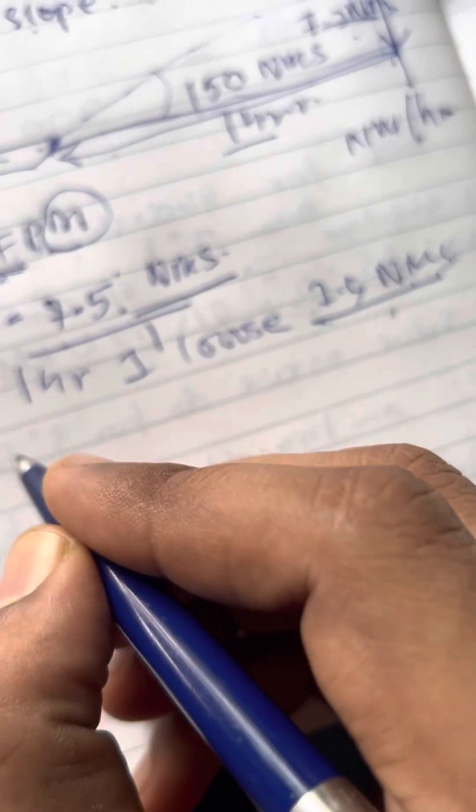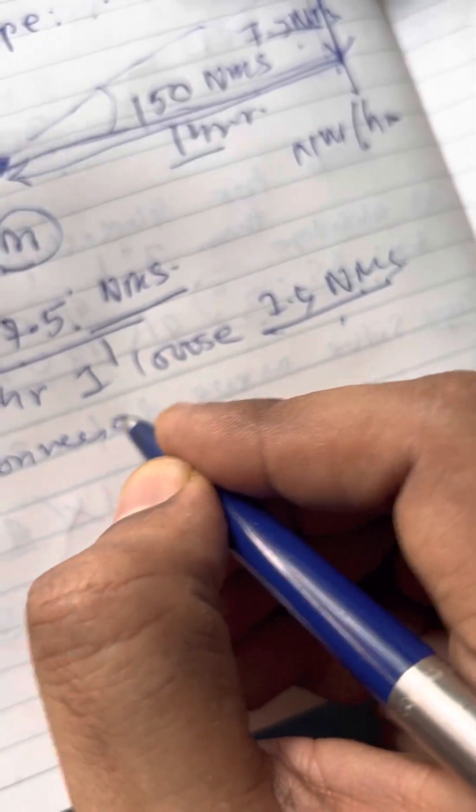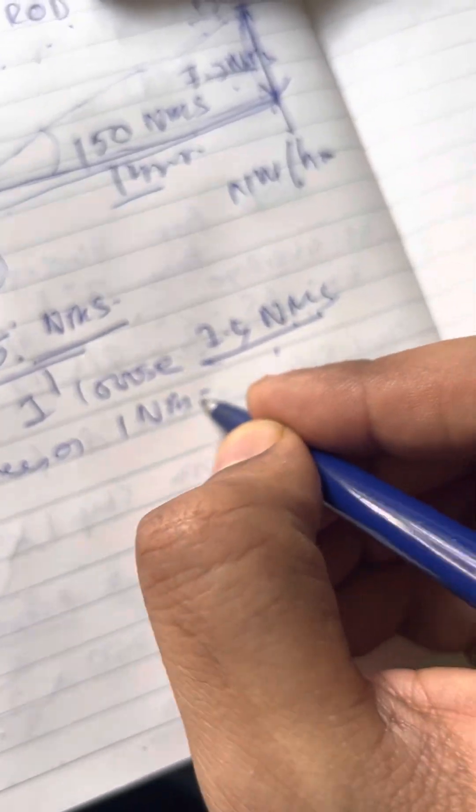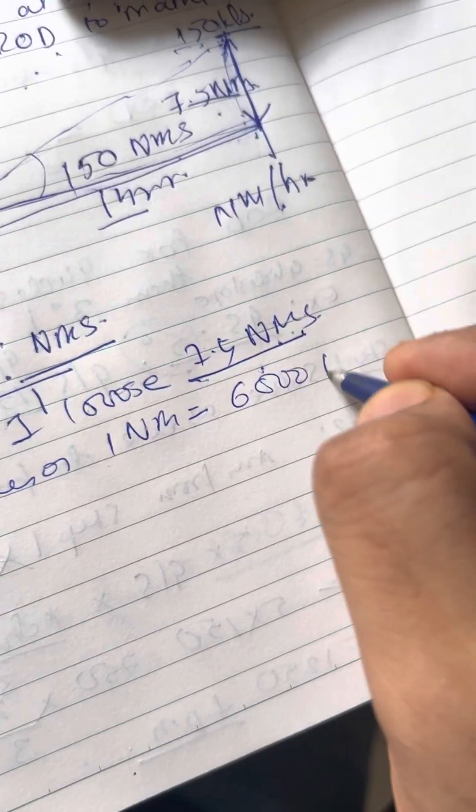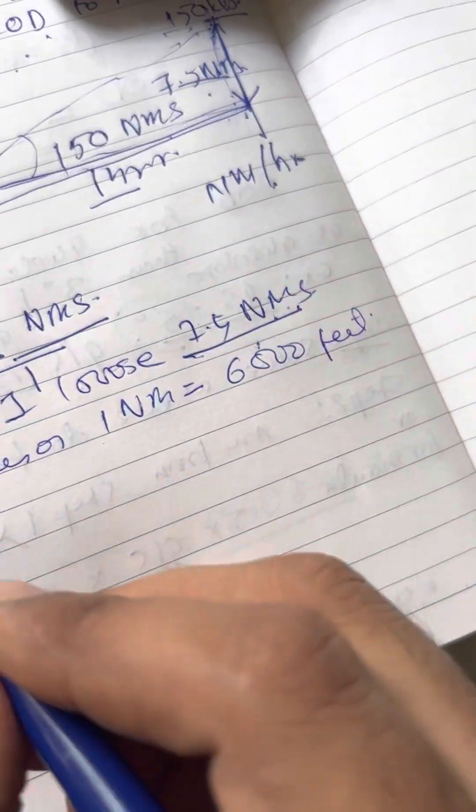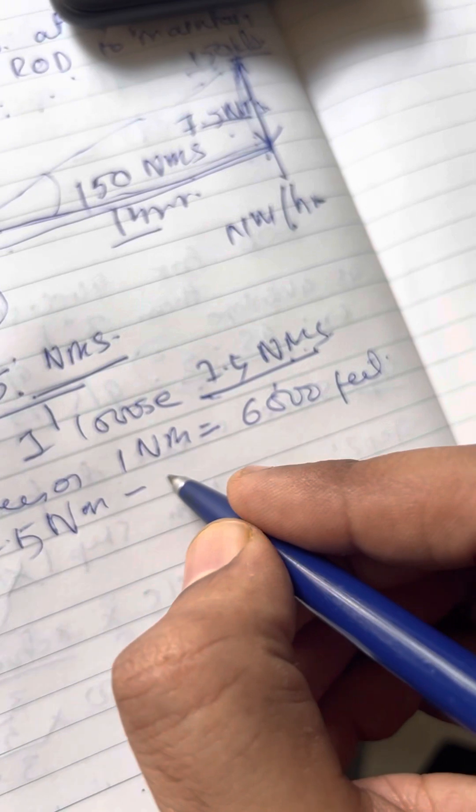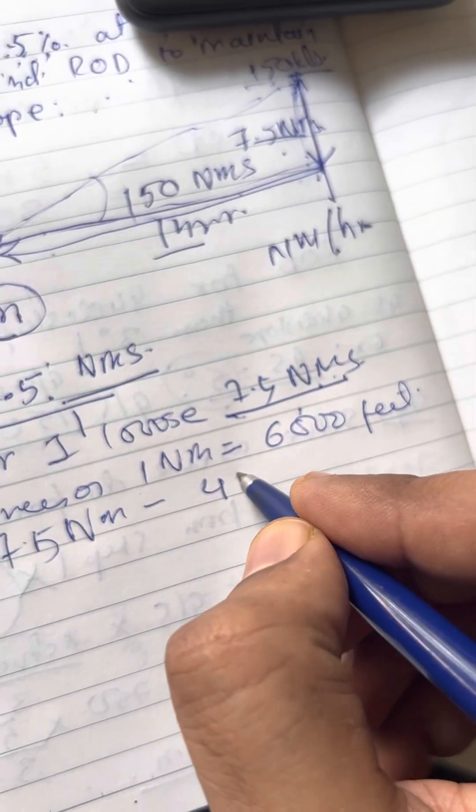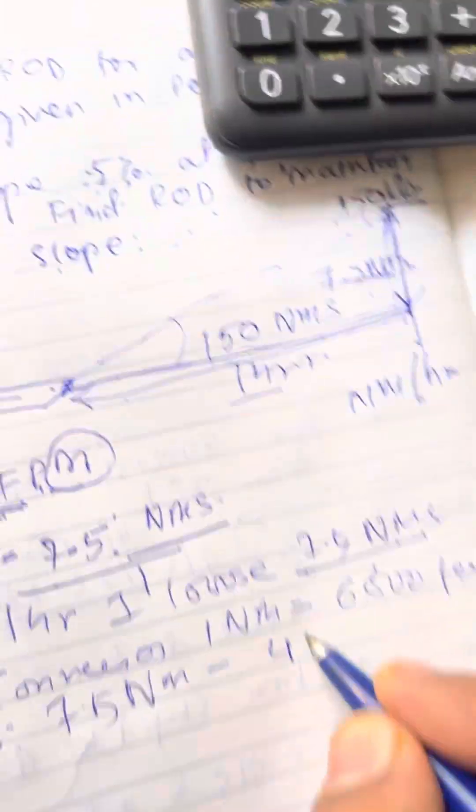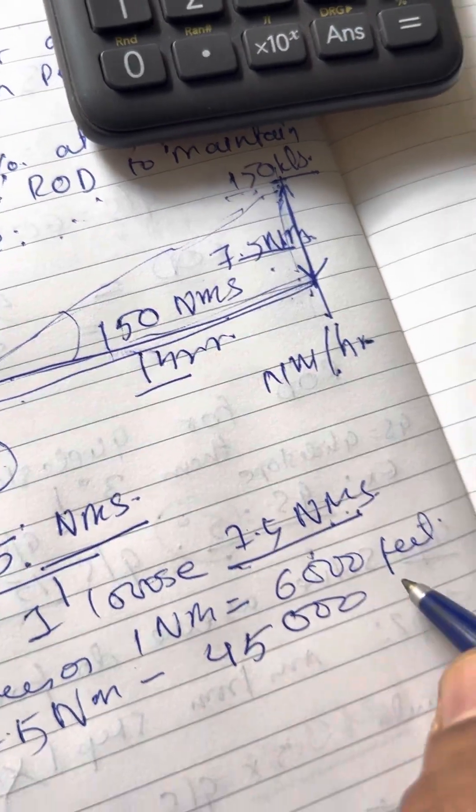For our calculations, we take this approximation of conversion, one nautical mile is 6000 feet. We get 45,000 feet. So for conversion, you can also do it in your CX-3, one nm nautical mile is equal to 6000 feet.